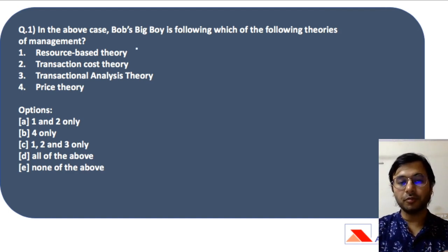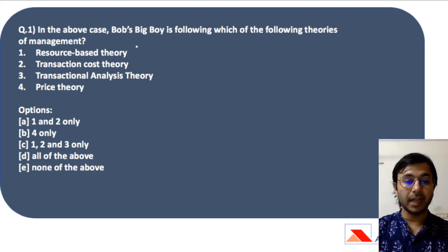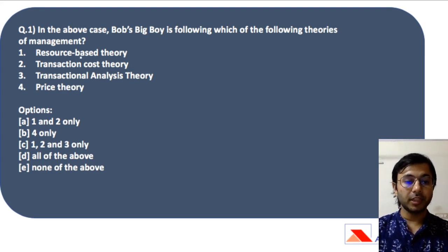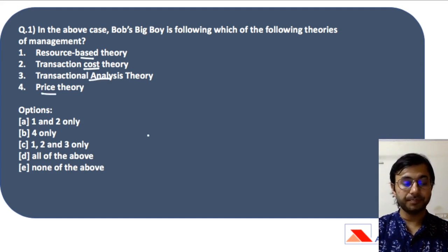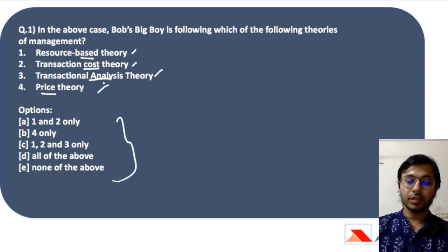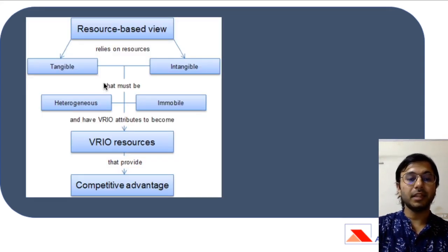It is a very classic question using a lot of jargons, a lot of old and new theories, which might actually go over your head and make you feel that you don't know anything about management. The first option is resource-based theory, the second is transaction cost theory, the third is transactional analysis theory, and the fourth is price theory. Before jumping to the answer, let me take you through all these four theories one by one and then we will come to the answer.